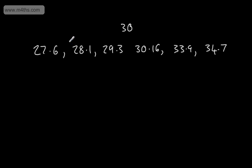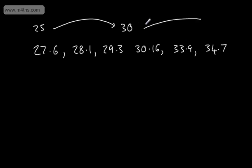If we think about the numbers in the 20s, they can either round to 20 or to 30. We know numbers 25 or more would round up to 30. All numbers 30 or greater can either round to 30 or to 40. If they're strictly less than 35, we could say they're going to round down to 30 to the nearest 10. So let's look at all the values that would round to 30 to the nearest 10.